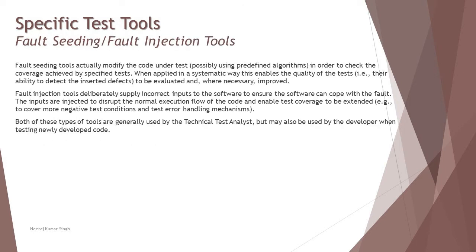Beginning with fault seeding or fault injection tools — these tools are quite helpful to see the effect and check how exactly the system behaves. Fault seeding tools modify the code under test in order to check the coverage achieved by a specified test. When applied in a systematic way, this enables the quality of the test to be evaluated and where necessary improved.